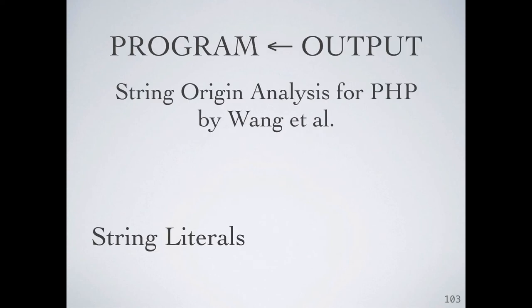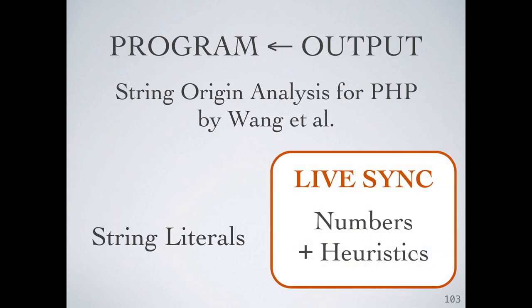Our live synchronization is most closely related to a system for PHP by Wang et al. Their approach focused on strings rather than numeric values. When the user directly modified strings in the output, they used execution trace information to automatically update string literals in the code. When an automatic update was not available, they highlighted relevant locations in the program for manual intervention. Although we also used trace information, our system handles numeric expressions instead of strings. And, because we don't want to interrupt the direct manipulation workflow, we additionally implemented heuristics to allow automatic synthesis even when there's ambiguity.